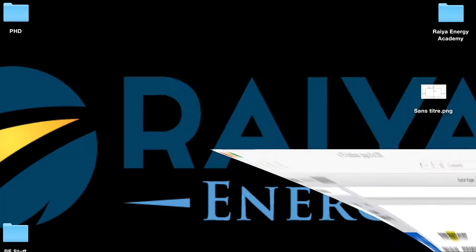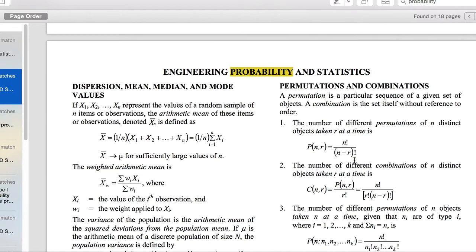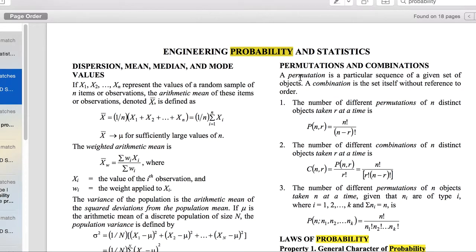Let's go to our handbook. A permutation here, as defined, is a particular sequence of a given set of objects. The number of different permutations of 10 students in our example, taken three at a time, because you need a president, a vice president, and a secretary. So in our case, n is 10 and r is 3. So let's go ahead and apply that.